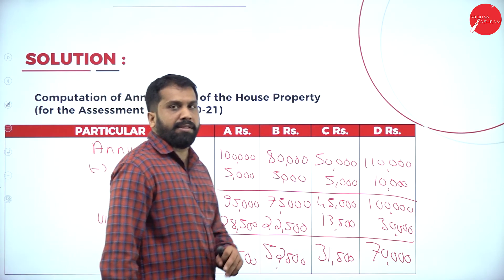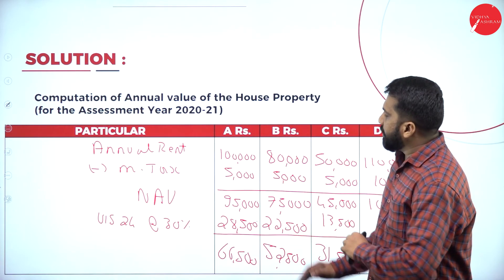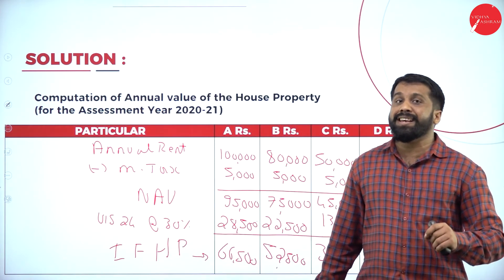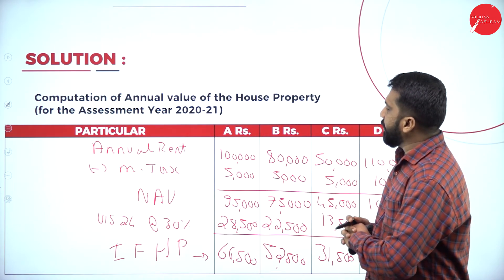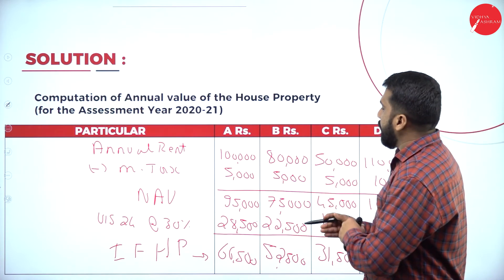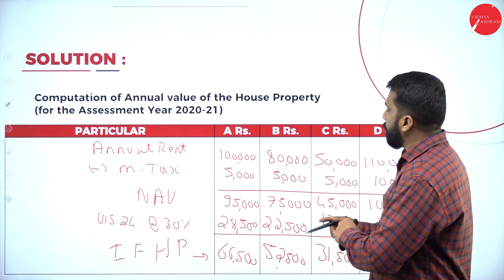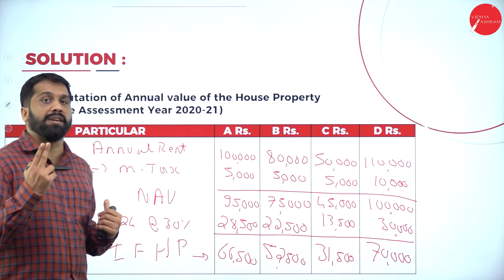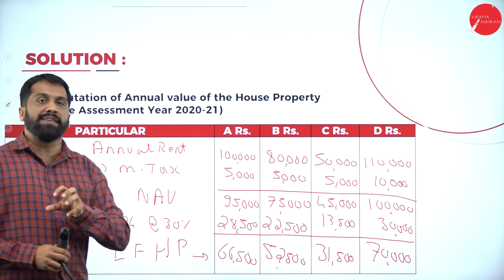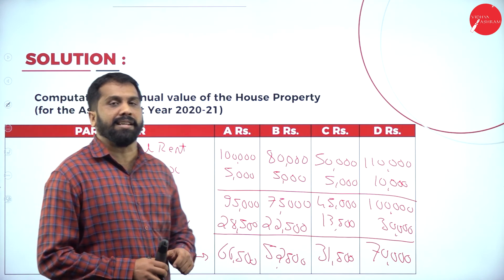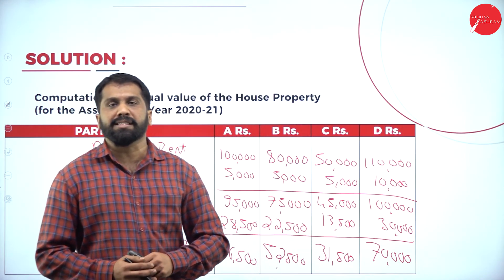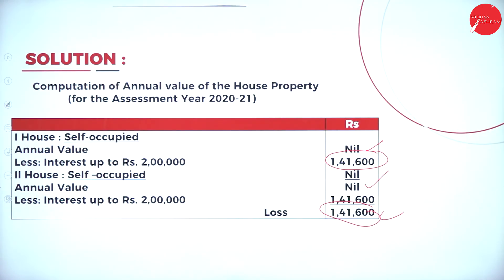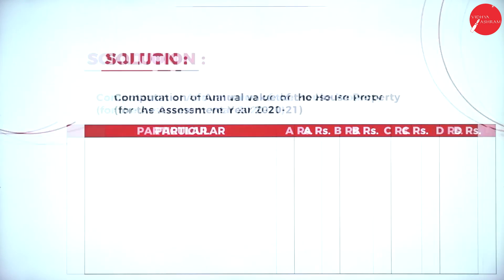These are the income from house property figures. We calculated annual rent, deducted municipal tax to get net annual value, then calculated 30 percent of net annual value to get income from house property. These kinds of questions can be expected for 10 marks. If an interest part is added it becomes a higher-mark question. You can take a screenshot of the slides for Problems 5 and 6 and their solutions.